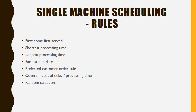The sixth rule is the Covert rule, where cost of delay and processing time are taken into account. If the cost of delay is high, that job is processed first to avoid significant financial loss for the company. Finally, the seventh rule is Random Selection, where any customer's job order is randomly chosen for processing.